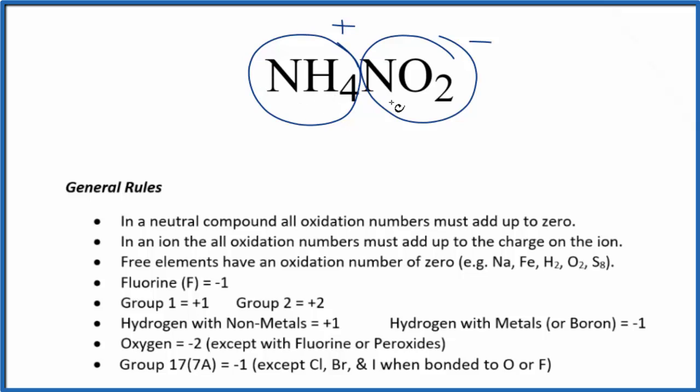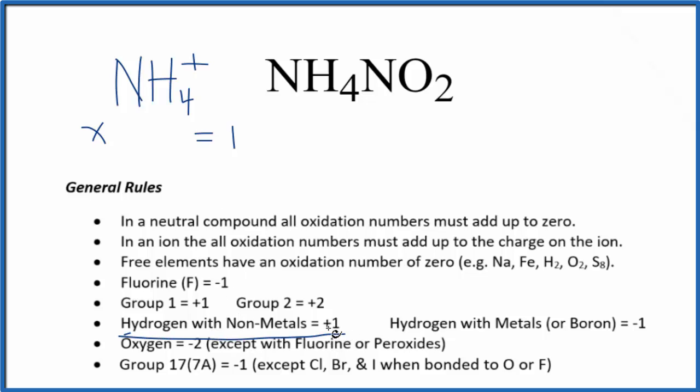Let's do the ammonium ion first. So ammonium, that's NH4 plus. We know that the oxidation numbers of all these elements are going to add up to that positive one. We don't know nitrogen, we're calling that X. But hydrogen here, when it's bonded to nonmetals, nitrogen is a nonmetal, hydrogen is going to be just a positive one.